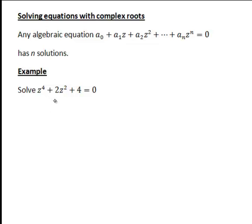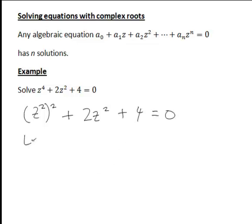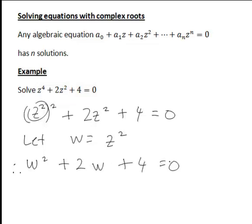The equation we're going to look at is z⁴ + 2z² + 4 = 0. You'll notice that all the powers of z are even, so we can think of this as (z²)² + 2z² + 4 = 0. Hence we can make a substitution: let w = z², and rewrite the equation as w² + 2w + 4 = 0.